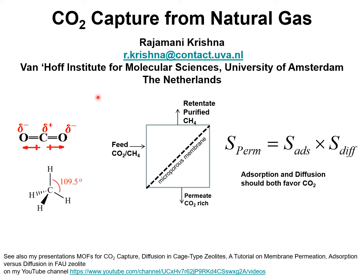My presentation today is about CO2 capture from natural gas that consists primarily of methane. One possibility of removing CO2 from natural gas is to use a microporous membrane that allows selective permeation of CO2, and therefore the purified methane is recovered from the retentate. The permeation selectivity is a product of adsorption selectivity and diffusion selectivity, so the ideal membrane construct is one in which both adsorption and diffusion favor CO2.